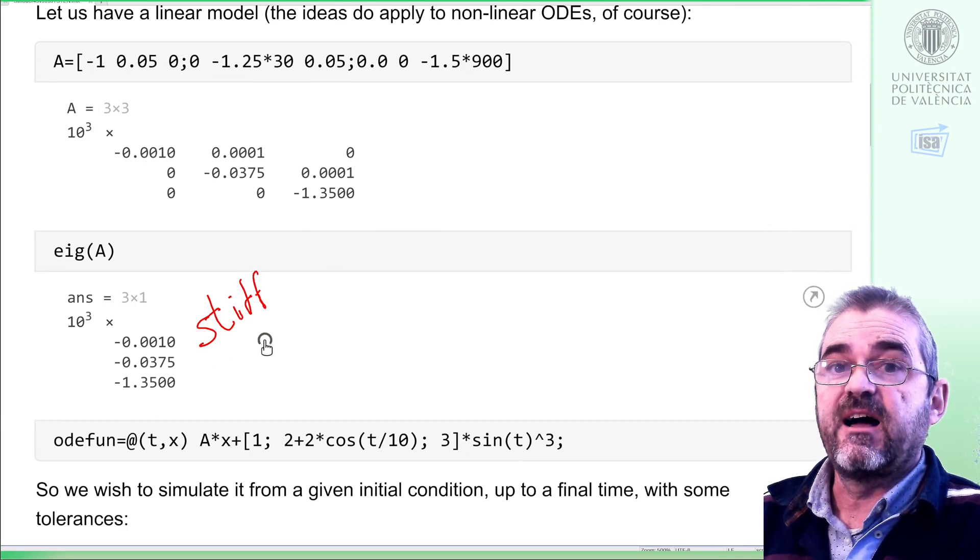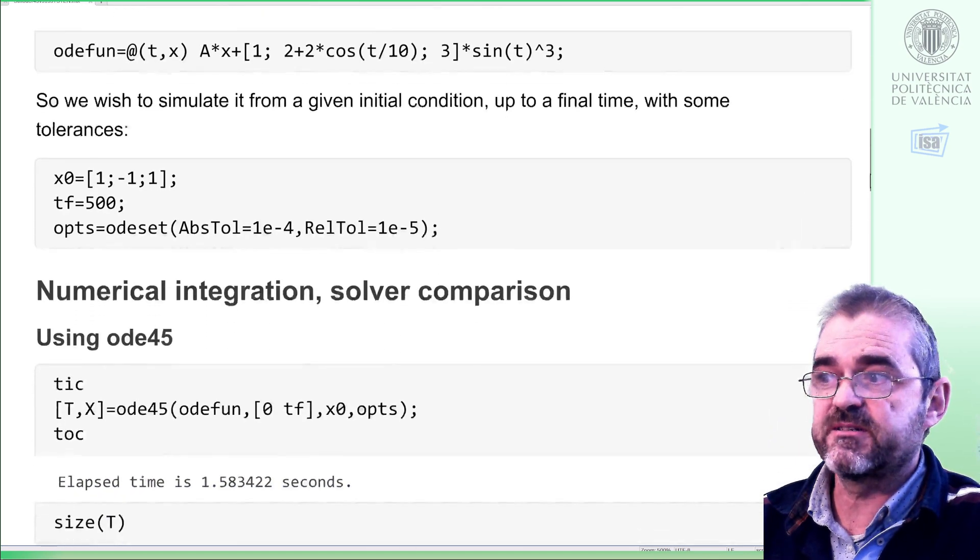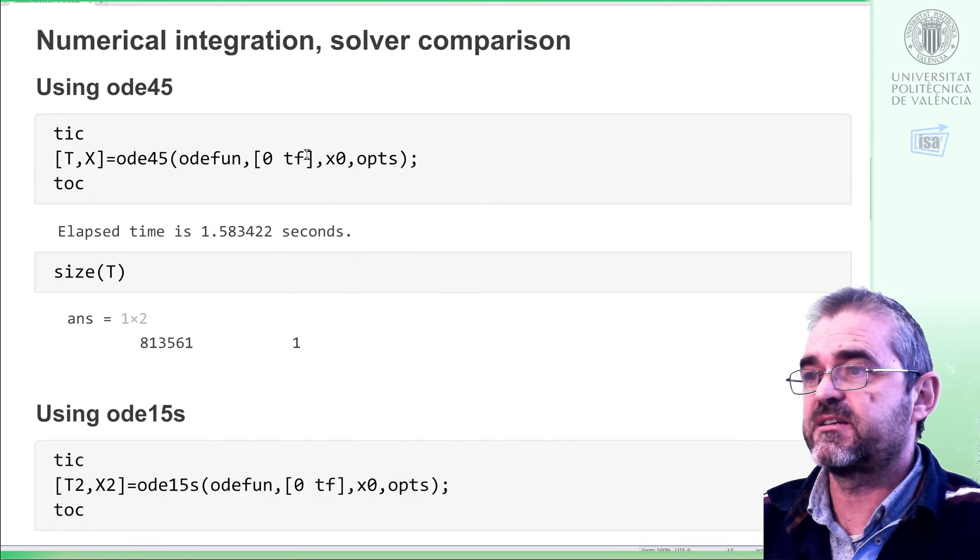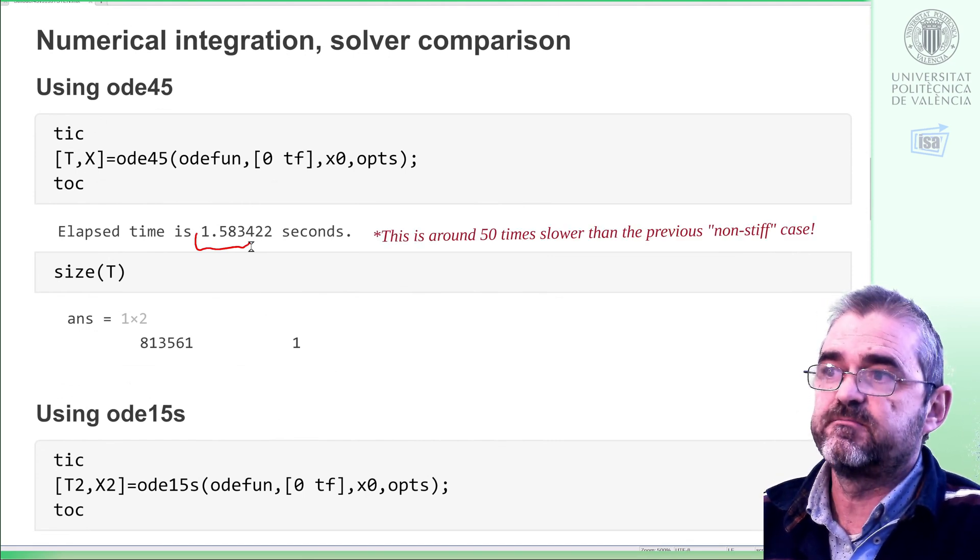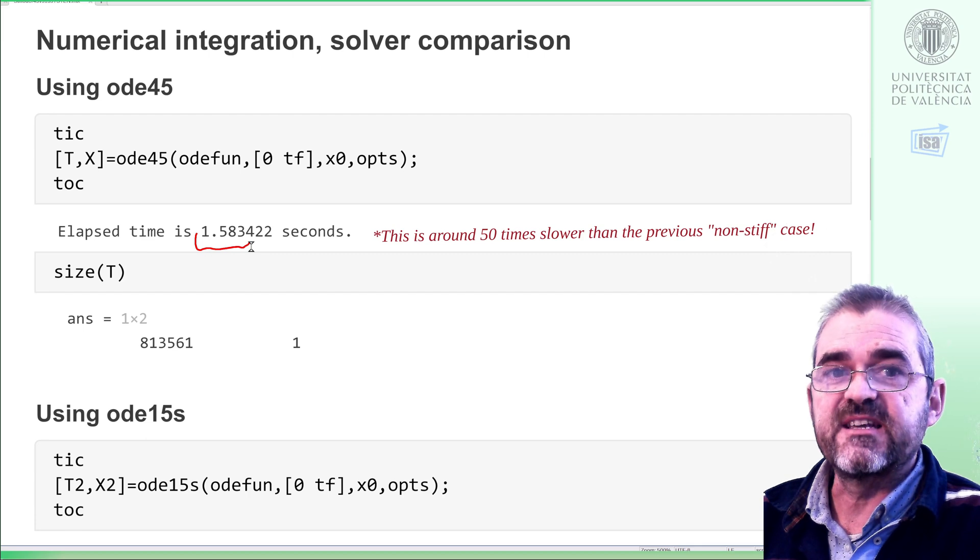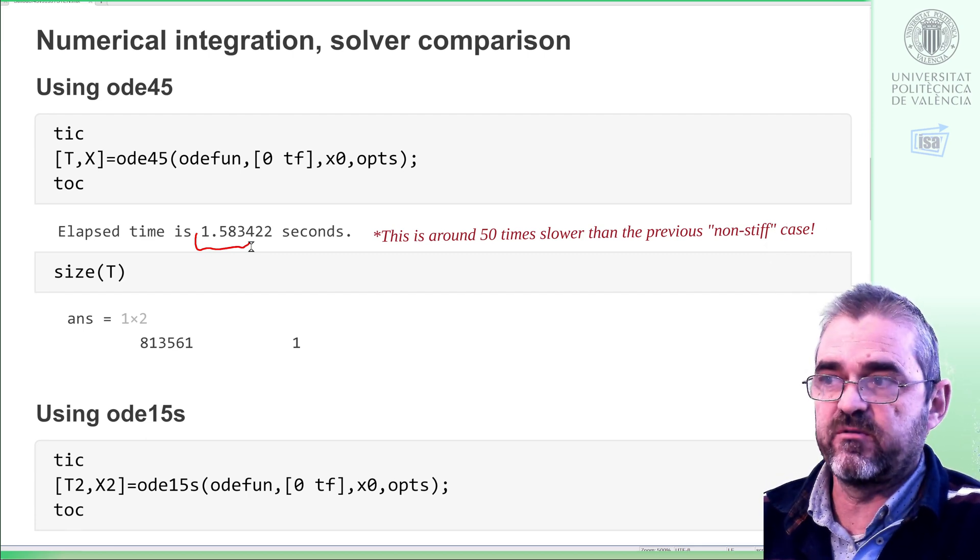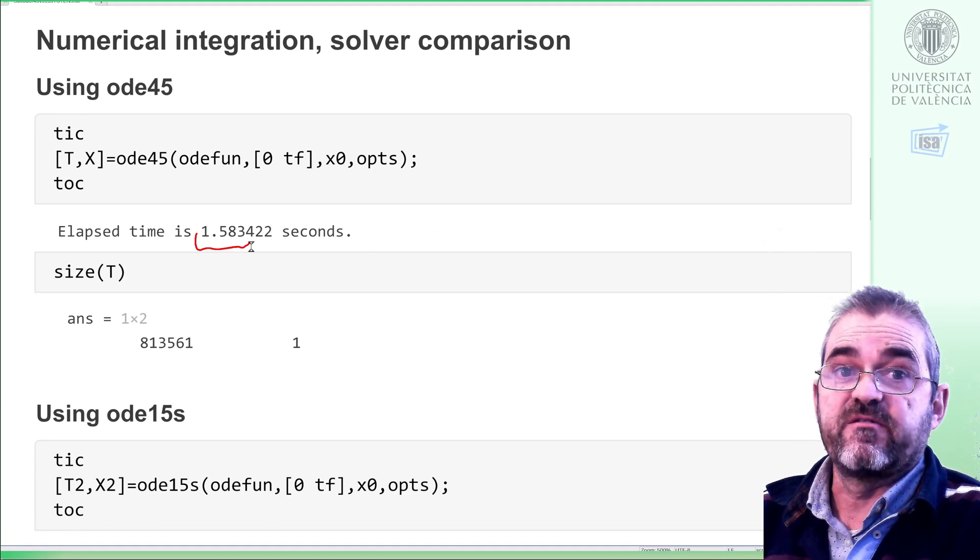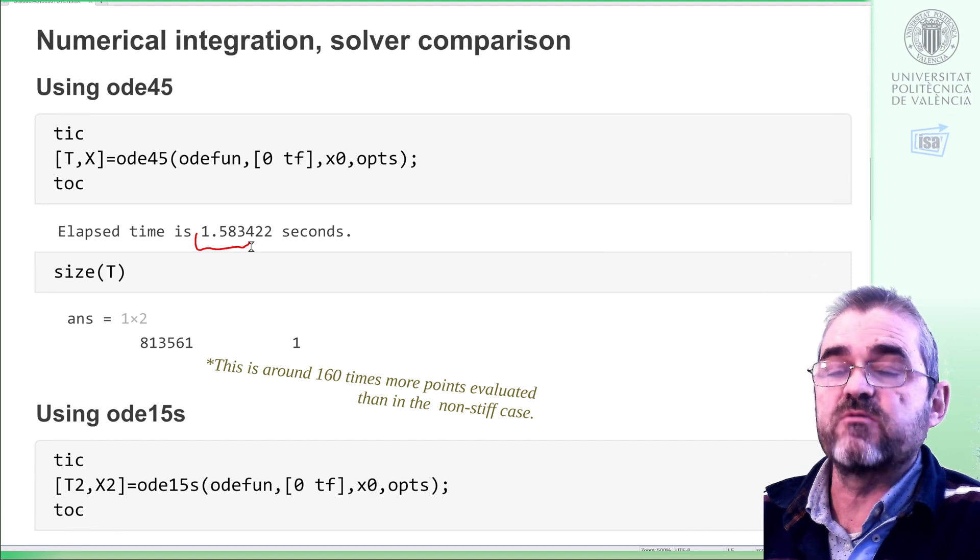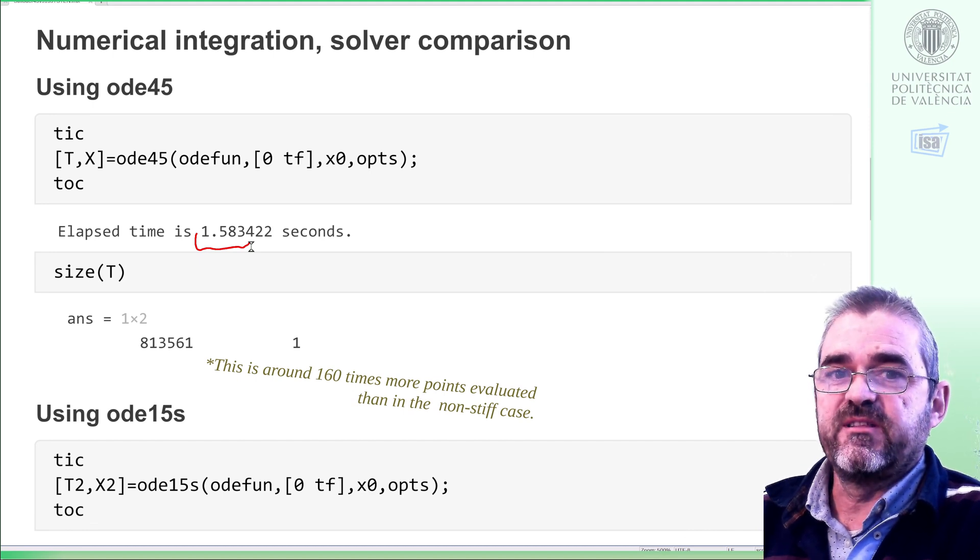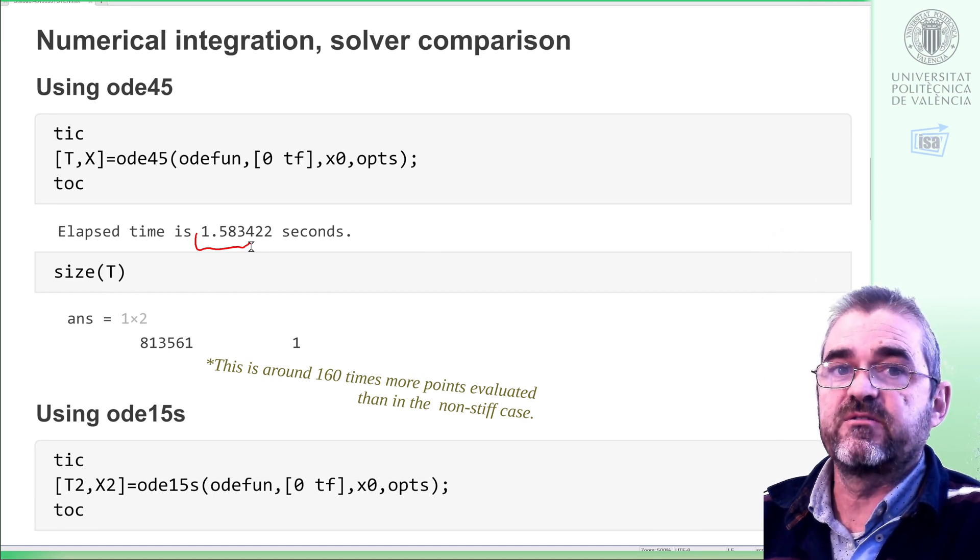Let's see how the two solvers behaved. Same initial conditions, same tolerances. Well, in this case, instead of 30 milliseconds, it took 1.6 seconds. So it's kind of 50 times longer than before. And instead of 5000 points, it needed to store in memory 800,000 ones. So it needed almost 200 more points to meet the desired tolerances.